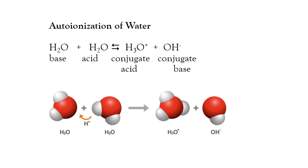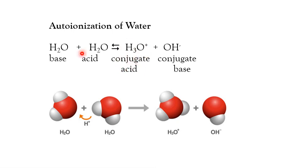When two water molecules combine, one acts as an acid and the other as a base, producing H3O+ and OH-. If you reverse the reaction, the hydroxide ion accepts H+ from H3O+ to give back two water molecules — so both sides have an acid and a base. The base, after accepting a hydrogen ion, is called the conjugate acid. The acid, after losing the hydrogen ion, is called the conjugate base.